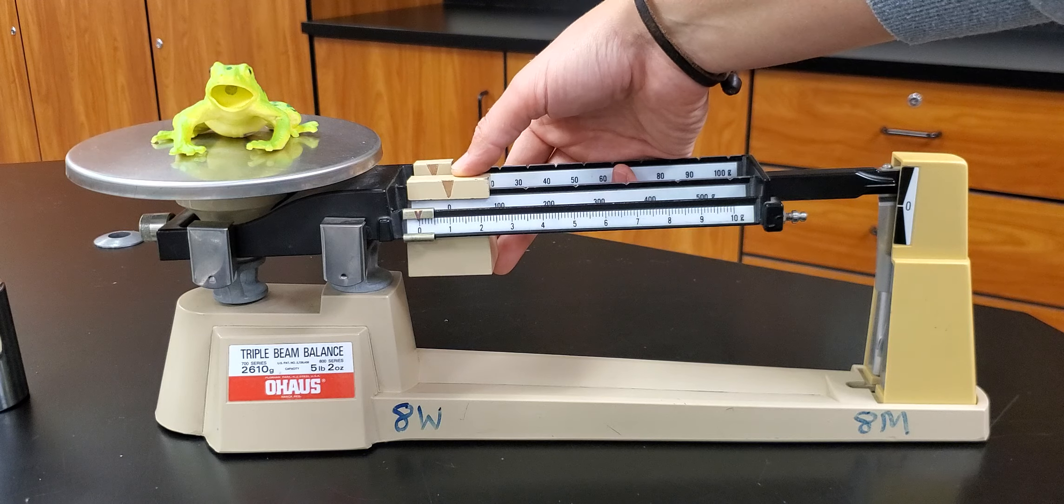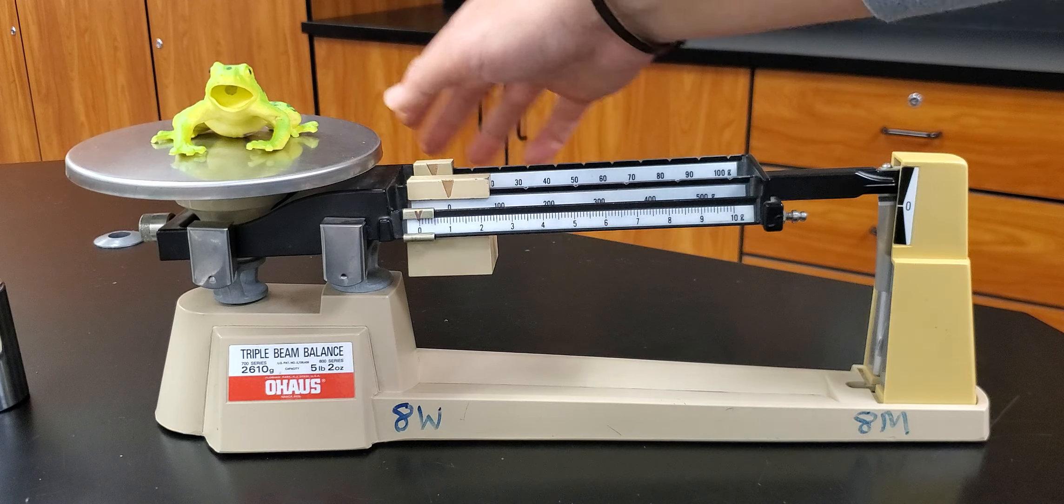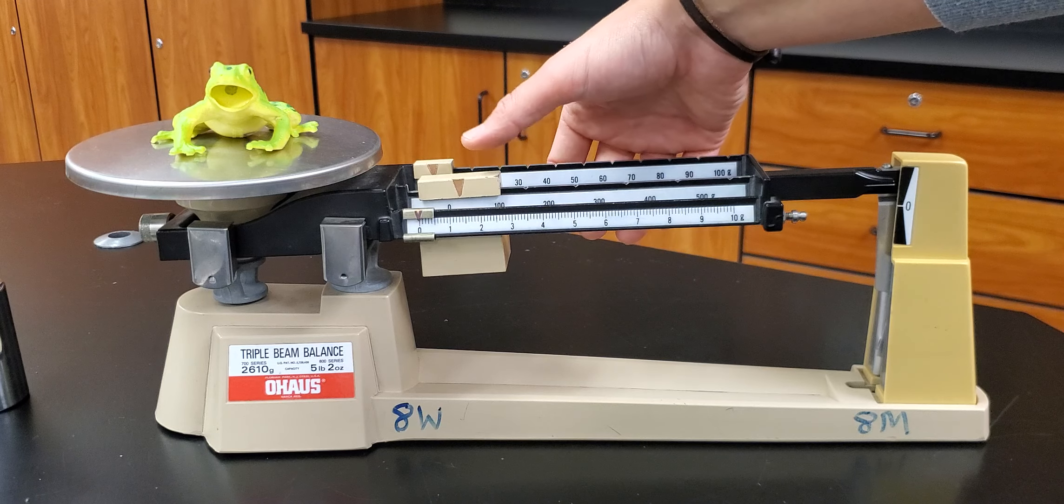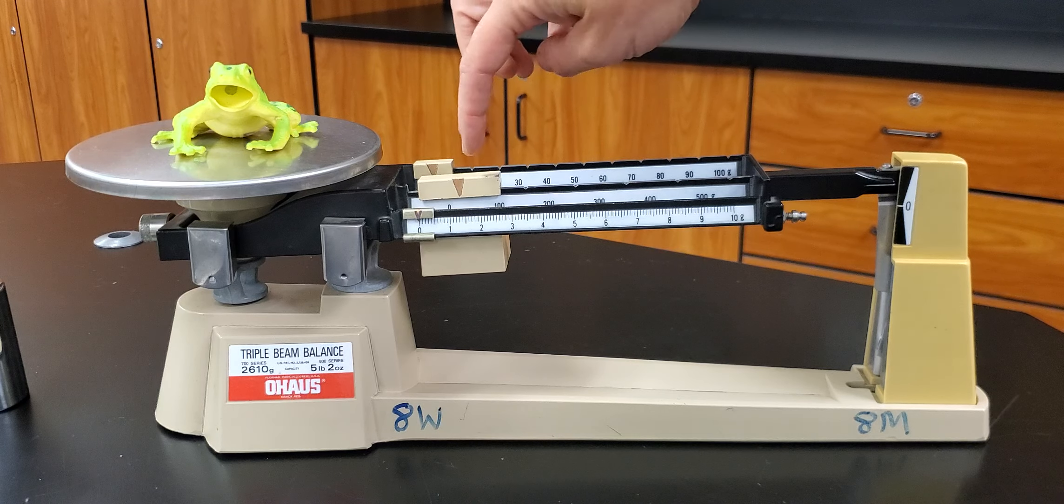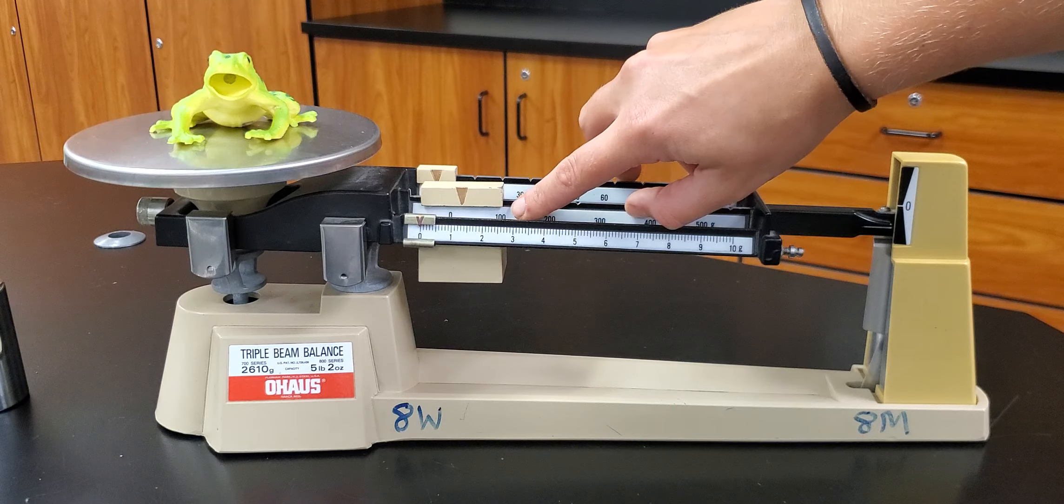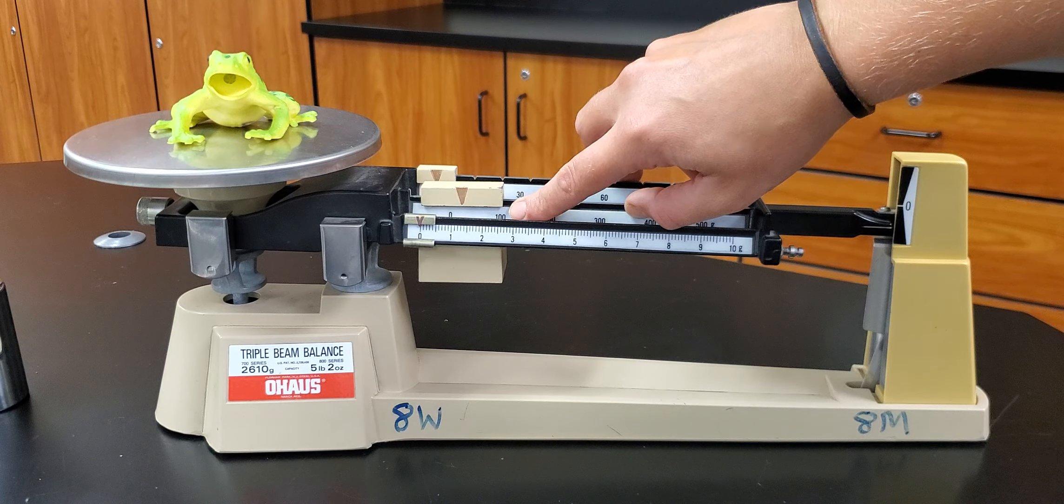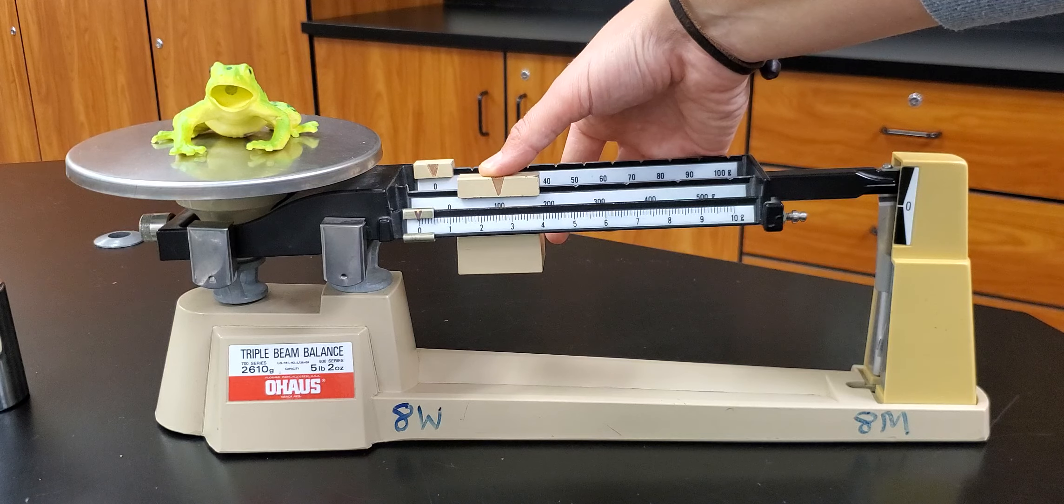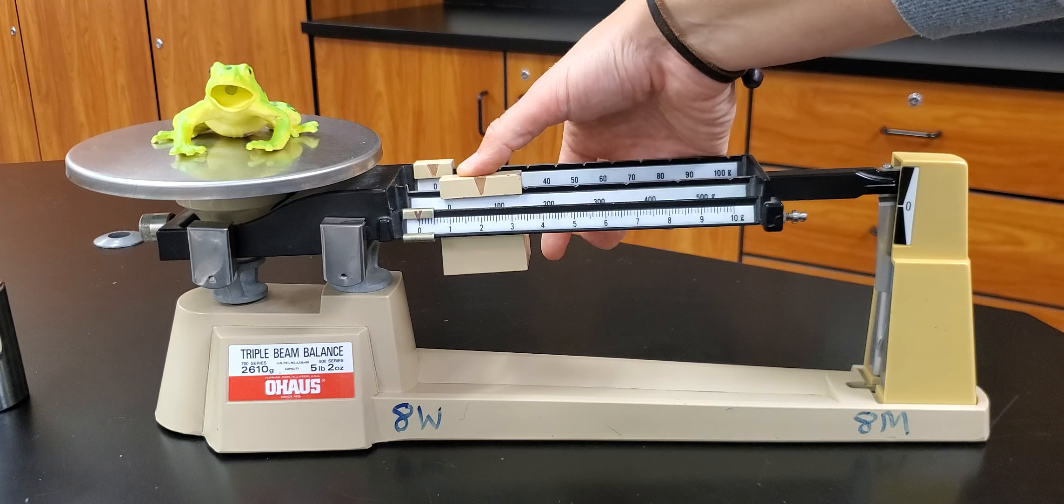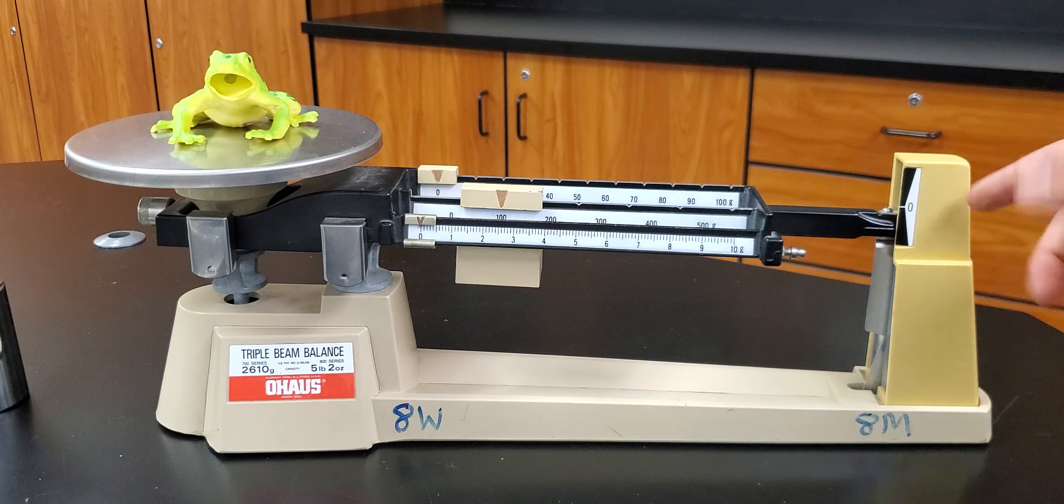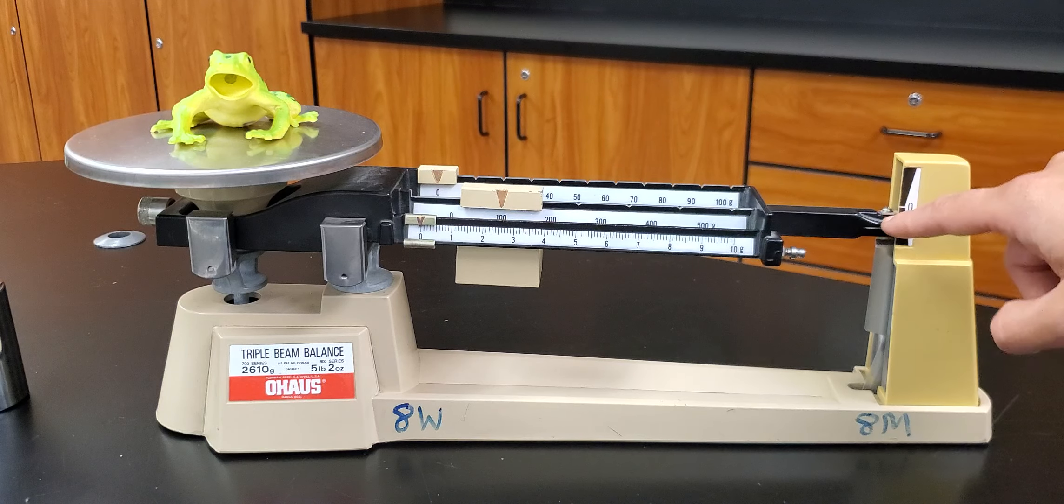So we always start with the biggest weight whenever we're measuring something. So I'm gonna start with this hundreds place weight and I'm gonna slide it down the beam until it clicks into the proper groove and this arrow will be pointing then at the 100 measurement right there. Okay? So I'm gonna slide it and listen for that click. Did you hear that click? I'll do it one more time a little bit louder. There we go.